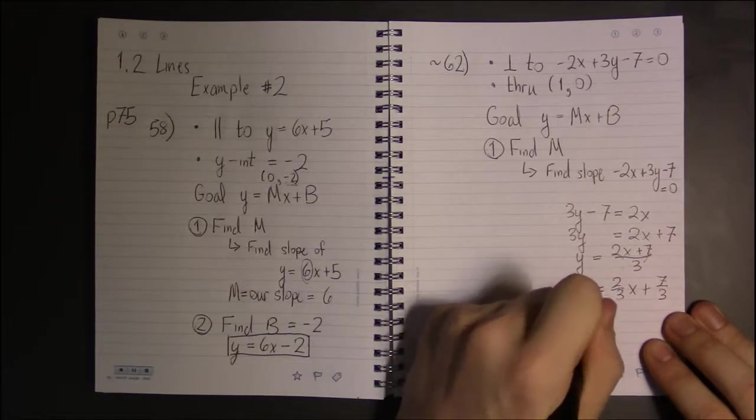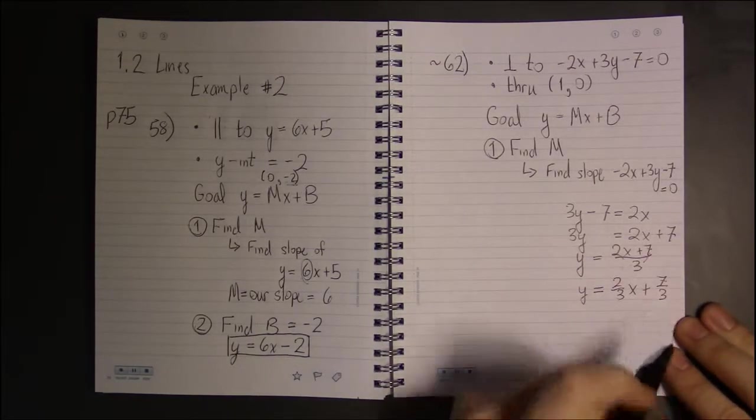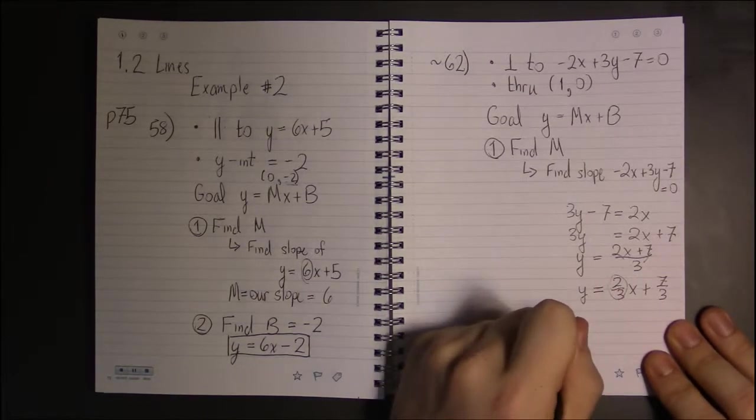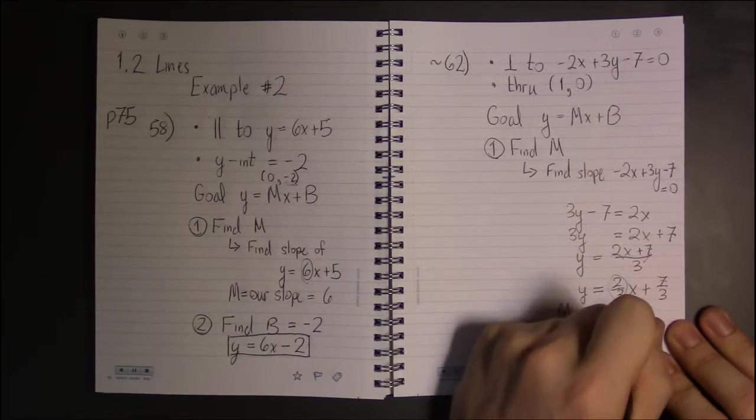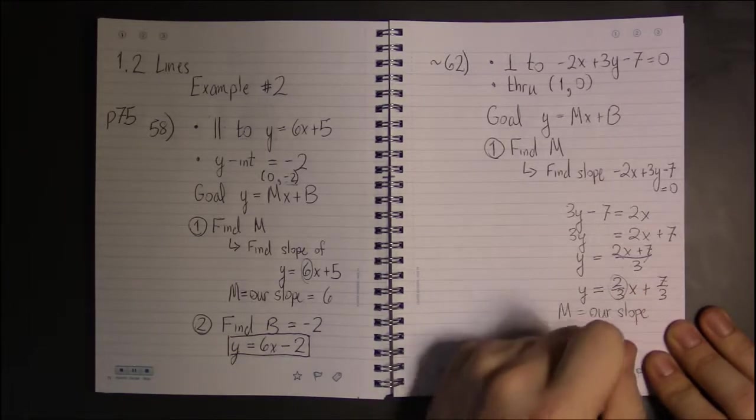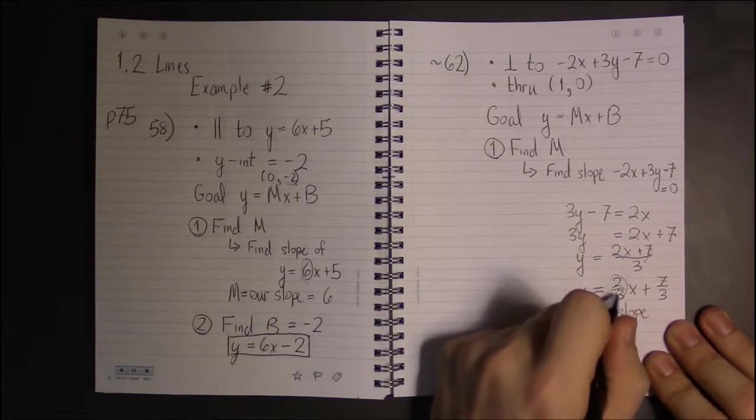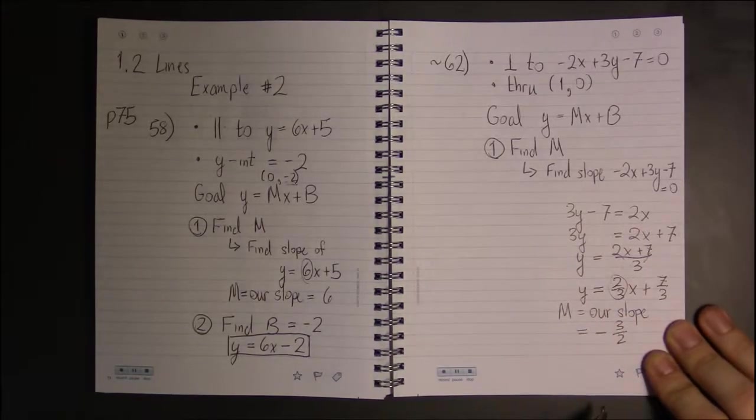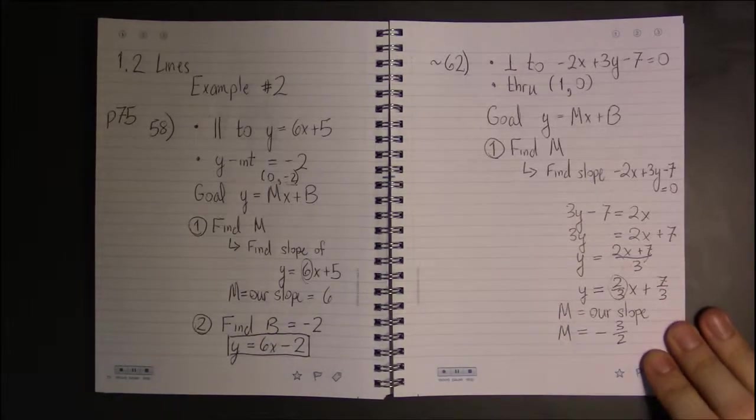And now we're in the right form, y equals mx plus b. So the slope of this line is 2 thirds, which means m, the slope for our line, is going to be the opposite, so we change the sign, and it's going to be a reciprocal. So instead of 2 over 3, we've got 3 over 2. So that's the slope for our line.